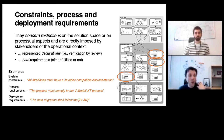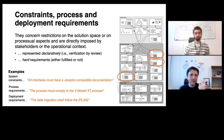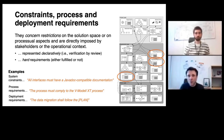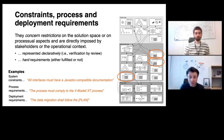Let's go through them quickly. Constraints, process, and deployment requirements all concern restrictions — either on the solution space or on processual aspects — directly imposed by stakeholders or the operational context. These requirements tend to be non-negotiable restrictions that are already well-justified by the actual operational context, and they are not typically associated with goals. They are typically represented in a more declarative way and verified by a simple review. They tend to be hard requirements: either fulfilled or not, with no margin for interpretation or negotiation.